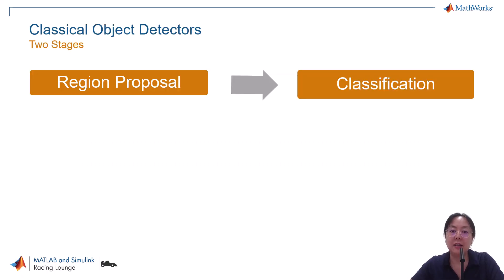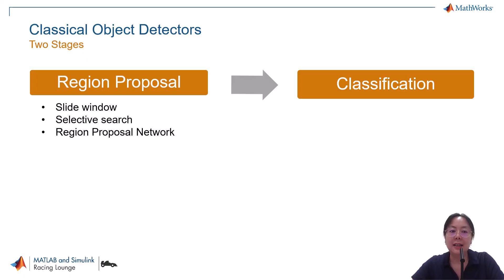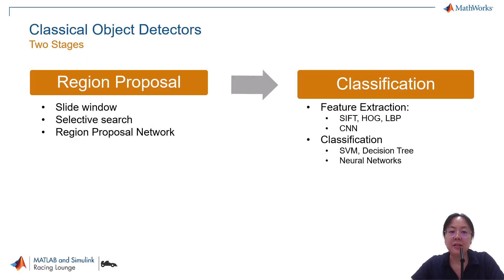Traditionally, object detection is done in two stages. First, finding regions of interest, which is called the region proposal stage. And second, classifying the objects within these regions. In the first step, regions of interest are generated using methods like sliding windows, selective search, or region proposal networks. In the second step, features are extracted from the regions, either using traditional methods like SIFT or HOG, or through a convolutional neural network. Then the regions are classified using methods like SVMs, decision trees, or neural networks.